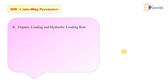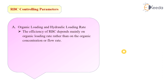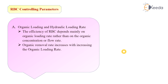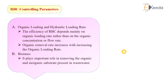There are a number of controlling parameters in RBCs. The first important parameter is organic loading and hydraulic loading rate. The efficiency of RBCs depends mainly on the BOD loading rate rather than the organic concentration or flow rate alone. Organic removal rate increases with increasing organic loading rate. Biomass plays an important role in removing organic matter and inorganic substances present in wastewater.